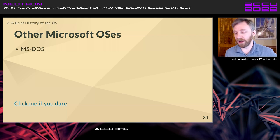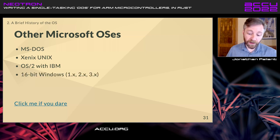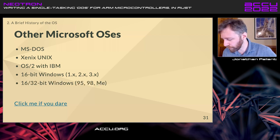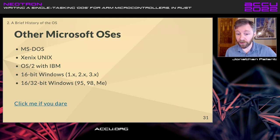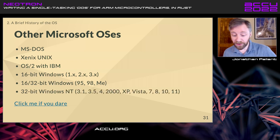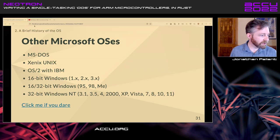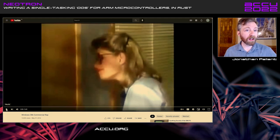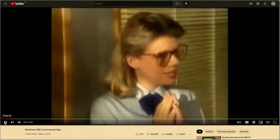A brief run through other Microsoft operating systems: MS-DOS, Xenix, OS/2 with IBM - that was a disaster. 16-bit Windows versions 1, 2, 3 - Microsoft has a great grasp of numbering, so after 3 we have 95. Then 95, 98, ME - and it is ME, not 'me.' And their 32-bit line which was NT, which we'll talk about in a minute.